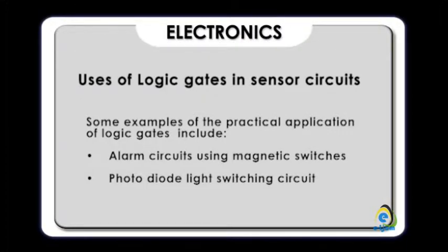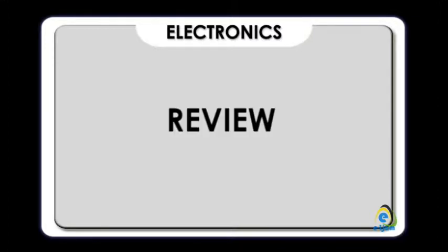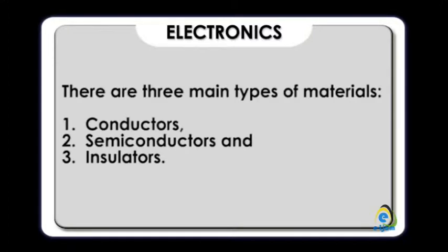Uses of logic gates in sensor circuits: some examples of practical applications of logic gates include alarm circuits using magnetic switches, and photodiode light switching circuits. Let us review — there are three main types of materials: conductors, semiconductors, and insulators.